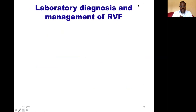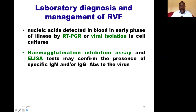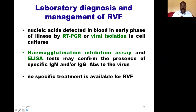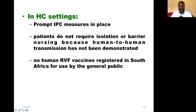For laboratory diagnosis of Rift Valley fever, nucleic acid can be detected in blood especially in the early phase of infection using real-time PCR. Viral isolation and hemagglutination inhibition assay can also be done, and with ELISA we can measure IgM and IgG antibodies. There is no specific treatment; early diagnosis in patients with renal failure may improve outcome because Rift Valley fever infection can lead to serious renal failure. Infection prevention and control measures should be in place in healthcare settings.